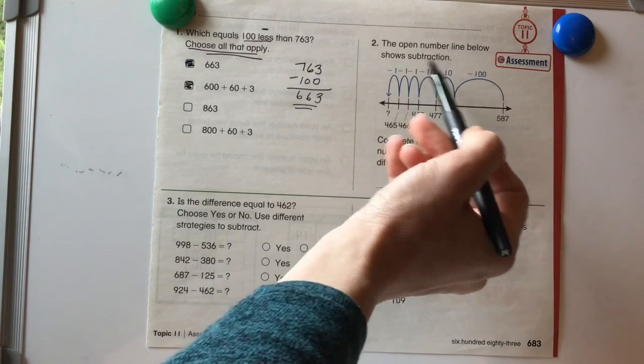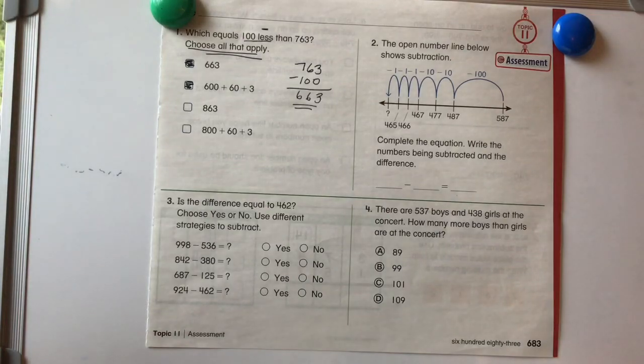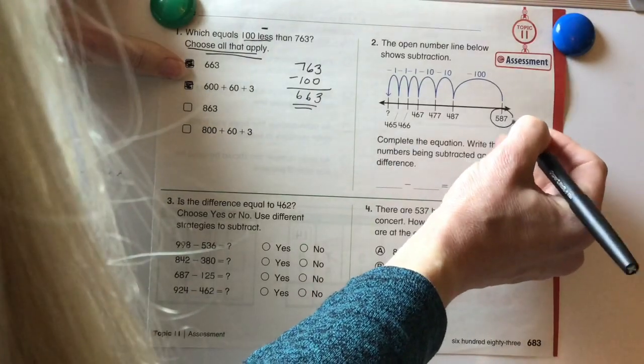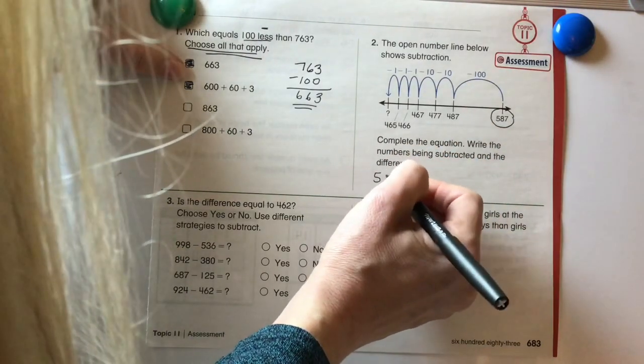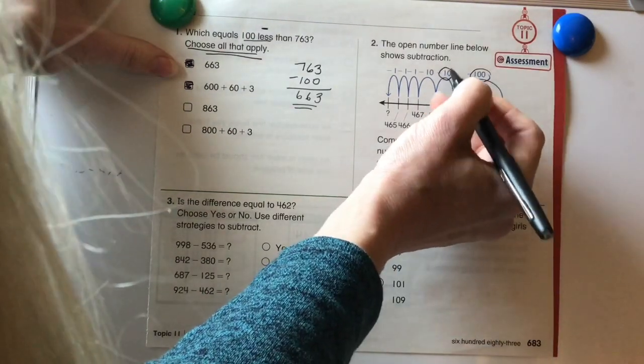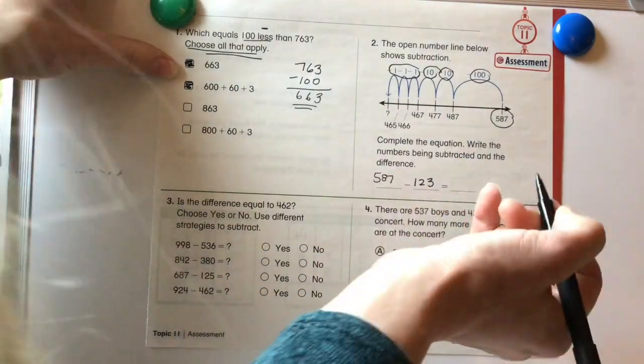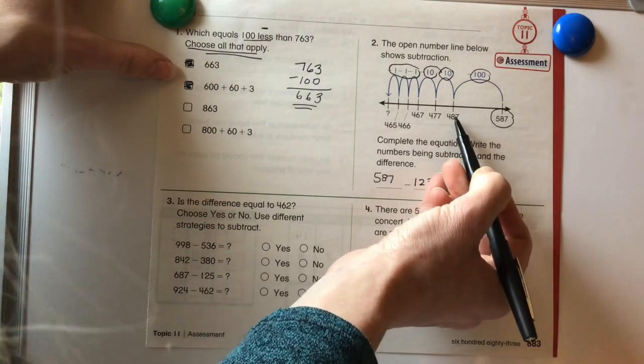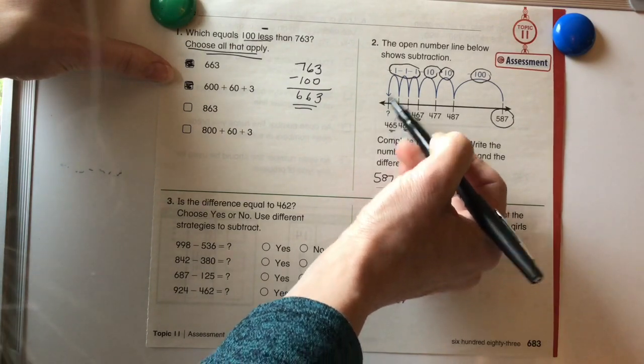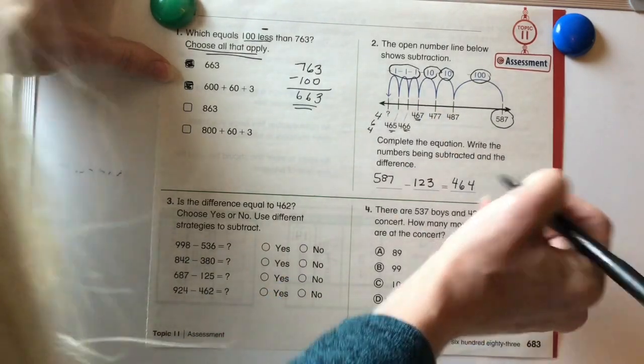Okay, let's take a look at number two. The open number line below shows subtraction. Complete the equation, write the numbers being subtracted, and the difference. So we need to take a look at what we are subtracting. We're going to start with the larger number first. It's 587. And then let's see what we're subtracting. 100, 110, 120, 123. So 587 minus 123. Let's take a look at the number line if it's done properly. This is 467, 466, 465. So the next one would be 464.